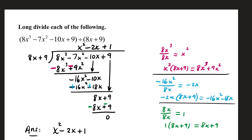First term under, 8x, divided by first term outside: 8x over 8x is 1, and this will be the final term of the quotient. 1 times the divisor is 8x plus 9. That goes underneath. Change your signs — if the term's positive, make it negative, and vice versa. Vertically, combine like terms. The first column goes to 0, the second column also goes to 0. Since the remainder is 0, our answer is this quotient: x squared minus 2x plus 1.